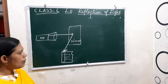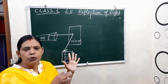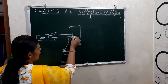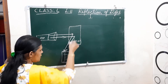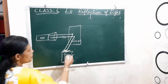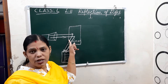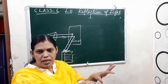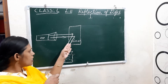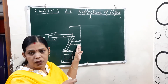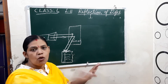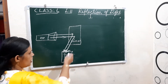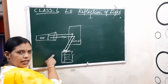From this activity, what you are able to understand is that light travels straight, but when it touches a smooth surface it bounces back and changes its direction. That is what this activity demonstrates.